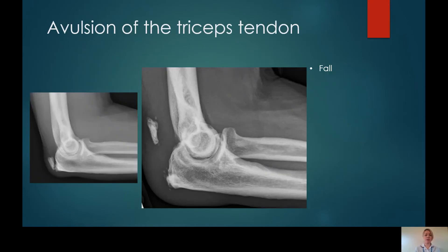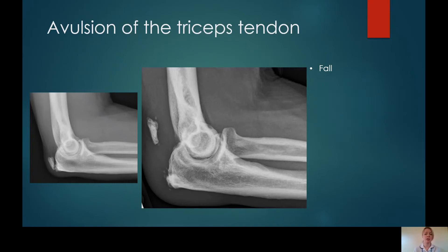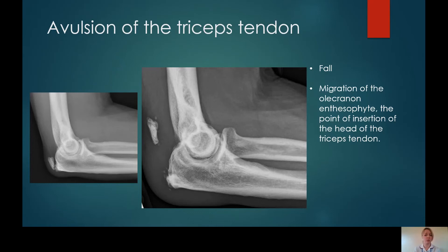This is an example of an avulsion of the triceps tendon. The image on the left is a previous radiograph, and this is what happened after the patient had a fall — there has been a fracture through that olecranon enthesophyte, which is displaced proximally. There is a large amount of soft tissue swelling present, which is another indicator of this injury. Another example of a tendinous avulsion you might see on an elbow X-ray is the insertion of the biceps tendon at the radial tuberosity, although these are less frequently seen on elbow X-rays.